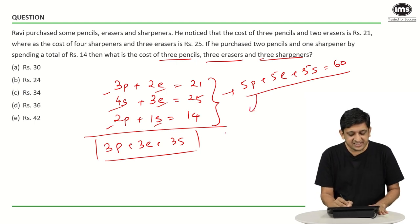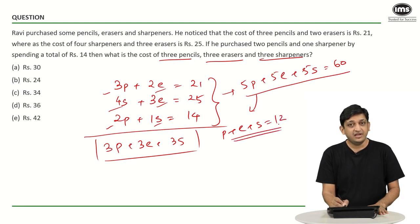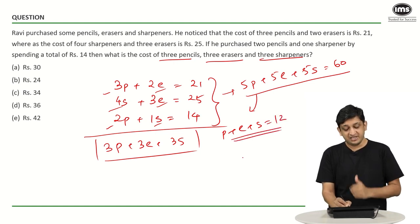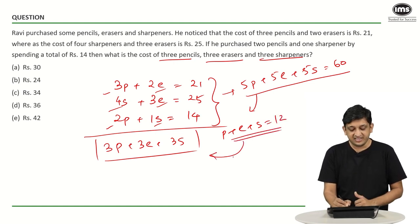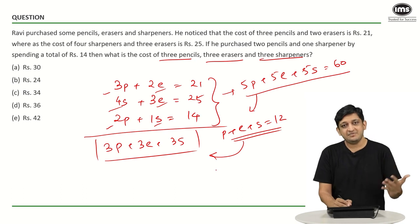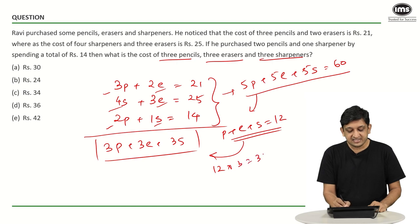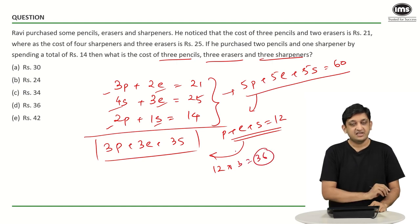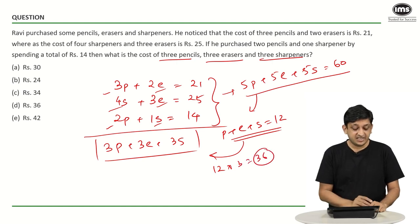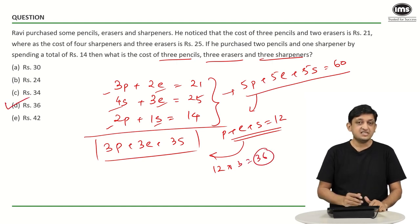P plus E plus S equals 12, so 3 times P plus 3 times E plus 3 times S equals 12 into 3, which is 36. The correct answer is option D, rupees 36.